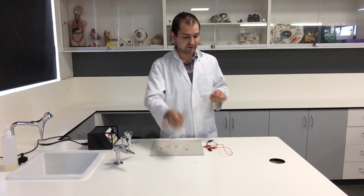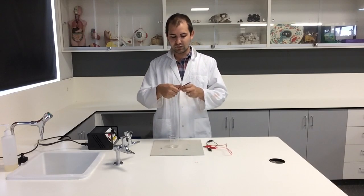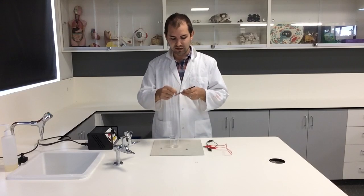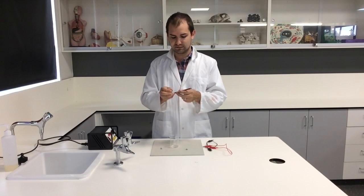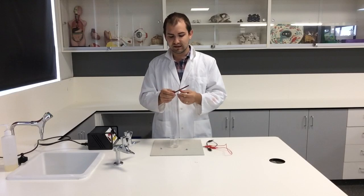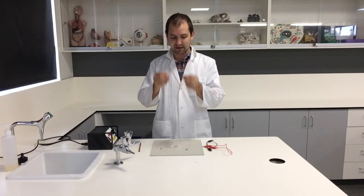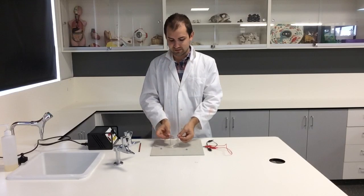For this experiment what you need to do is twist your Nichrome wire around a lead pencil to create a coil. Leave about 5 centimeters or 6 centimeters on the end of your Nichrome wire so it can hang out of your beaker like this on each side.